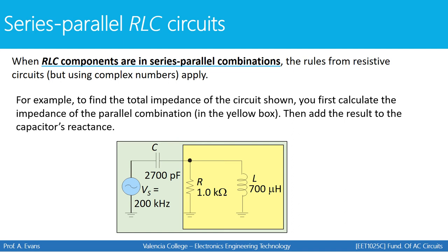We're going to take the same approach used in other series parallel circuits — looking for relationships, things that can be combined in series, and things that can be combined in parallel. We're going to use our definition of impedance for the capacitor, the resistor, and the inductor. We'll be relying on the equations and relationships from previous lectures related to RLC circuits and RC circuits to put all of this together.